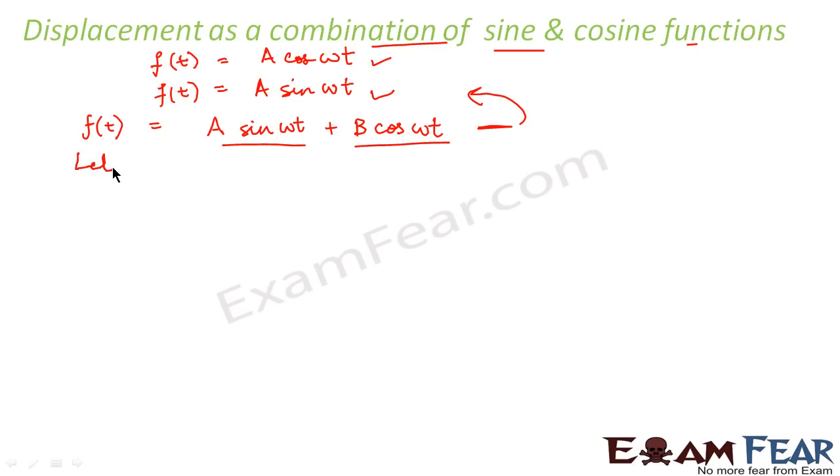So, how will we do that? Let us suppose that A is equal to D cos φ where D is some constant and φ is another constant and let us say B is equal to D sin φ. Now, if we put these values,